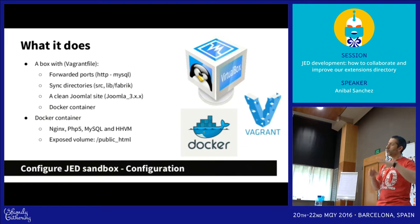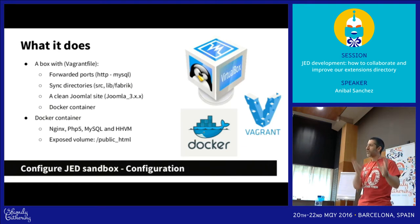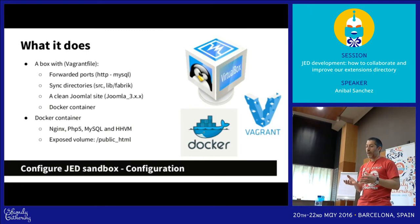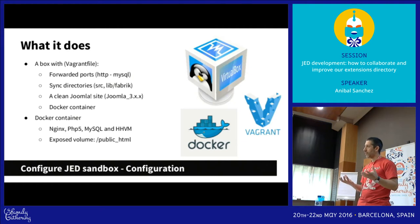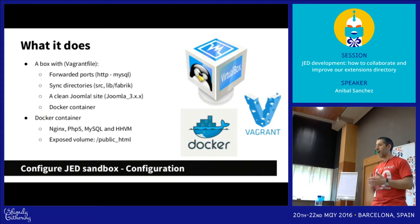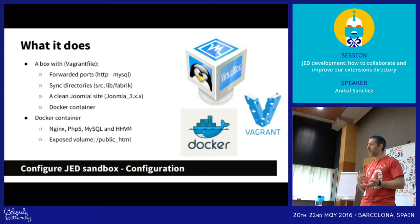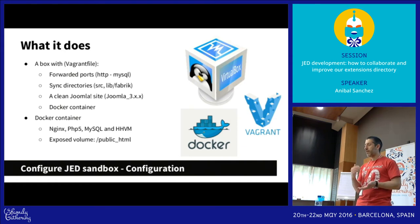The idea of this virtual configuration — the machine, Docker container, and everything else — is that all developers working with JET will have the same configuration. In Joomla CMS, the minimum requirement is PHP 5.3, but in Joomla JET we have higher requirements. This configuration for the virtual machine and Docker container installs the same environment that is currently available on the production server, so we can simulate the same performance case that is running on the live site.